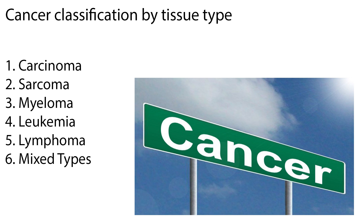Cancers are classified according to the type of tissue in which the cancer originates and by the primary location where the cancer first developed. Based on tissue type, cancers are classified into six major categories.